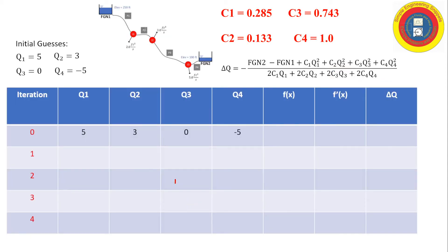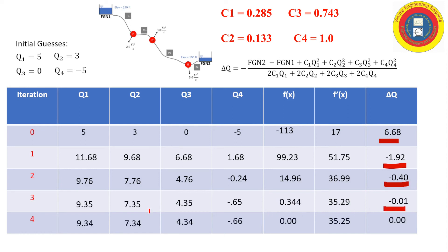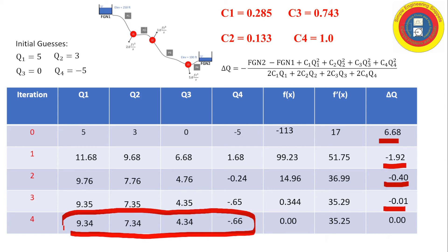Let's work through this. We have our initial guesses in the table and calculate the numerator and denominator to get the flow correction factor. We take this correction factor and add it to the four flows to get the flows for the next iteration — each flow has 6.68 added to it. We then calculate a new flow correction factor. Continuing to add the new correction factor through each iteration, we see the flow correction factor getting smaller. By the fourth iteration, we call this converged, and these are our final answers.